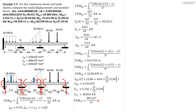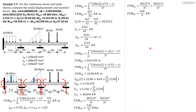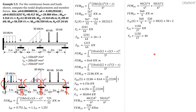Fixed-end moment CD equals 40 times 2 times 4 squared over 6 squared plus 50 times 4 times 2 squared over 6 squared, giving 520 over 9 kilonewtons. Fixed-end moment DC equals 40 times 2 squared times 4 over 6 squared plus 50 times 4 squared times 2 over 6 squared, giving 560 over 9 kilonewton meter. Summation of moments about C equals 0 to solve for FCR: FCR times 6 plus 560 over 9 equals 520 over 9 plus 40 times 4 plus 50 times 2. So FCR equals 1150 over 27 kilonewtons. Summation forces Y equals 0: FD plus 1150 over 27 equals 90, so FD equals 1000 over 27 kilonewtons.